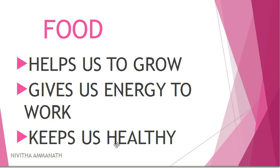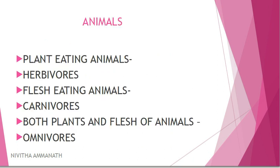It keeps us healthy. What do we need food for? It helps us to grow, it gives us energy to work, it keeps us healthy. We need food for all of us. Animals — there are three types of animals based on what food they eat. Plant-eating animals are one type.